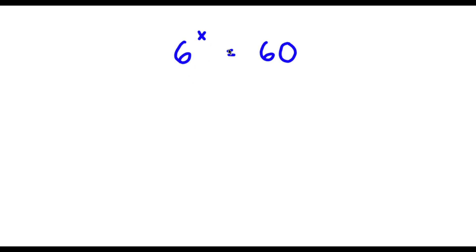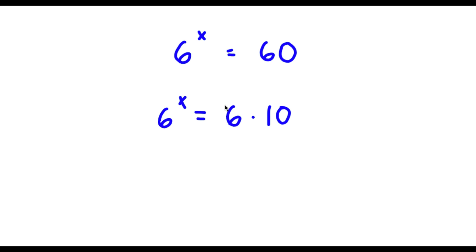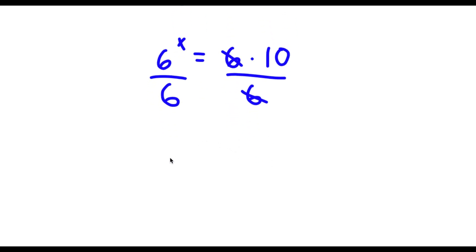Alright, so I have 6 to the power of x is equal to 60. The first thing I'm going to do is rewrite 60 as 6 times 10. So now I have 6 to the power of x is equal to 6 times 10. Now I'm going to divide both sides by 6, so these two cancel out, and I'm left with 6 to the power of x over 6 is equal to 10.